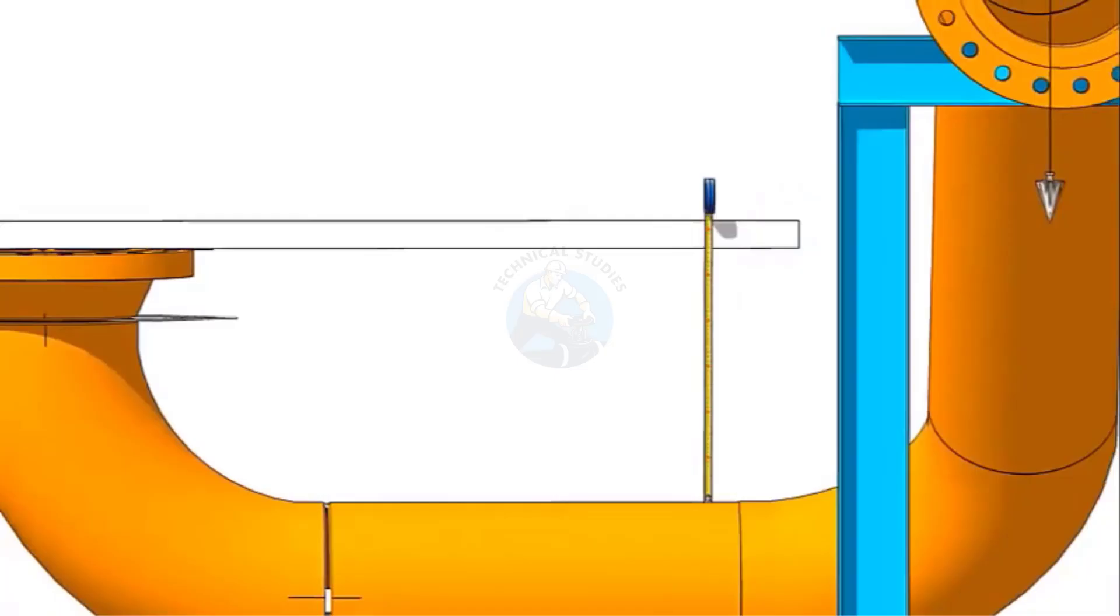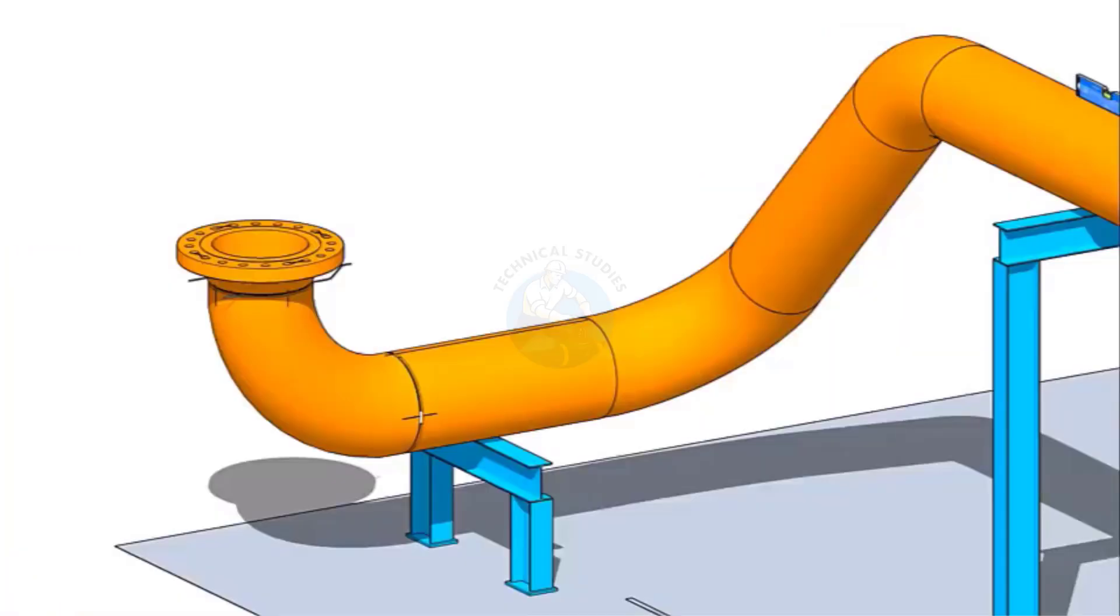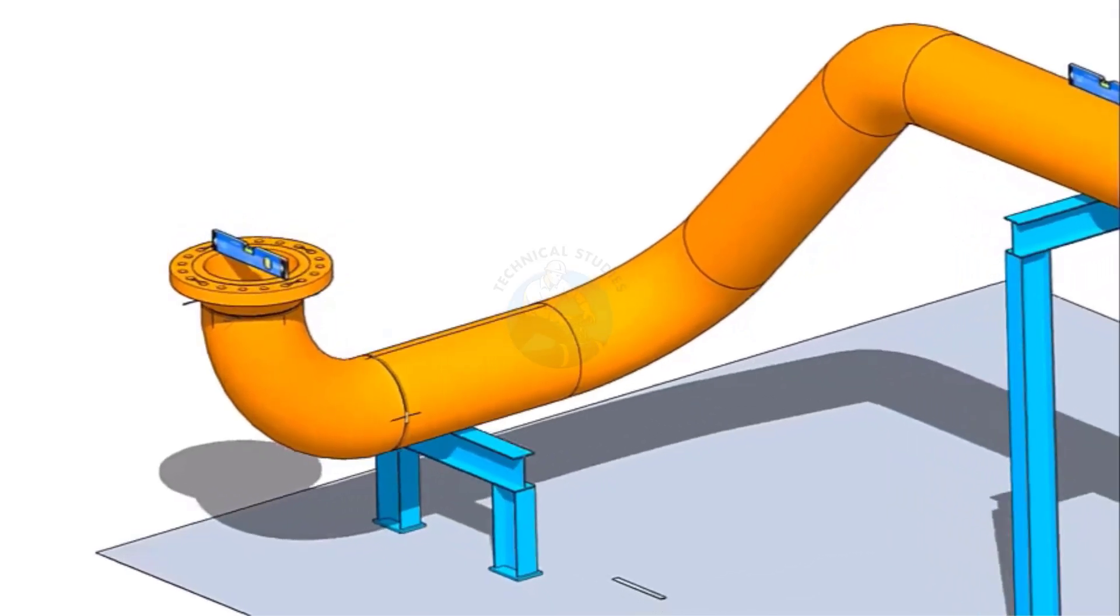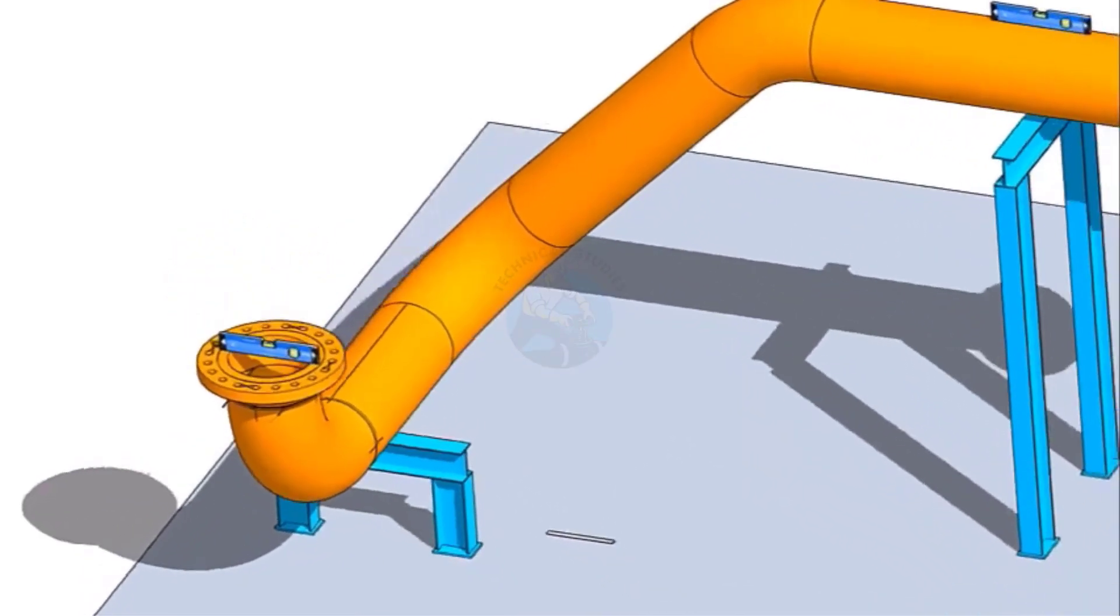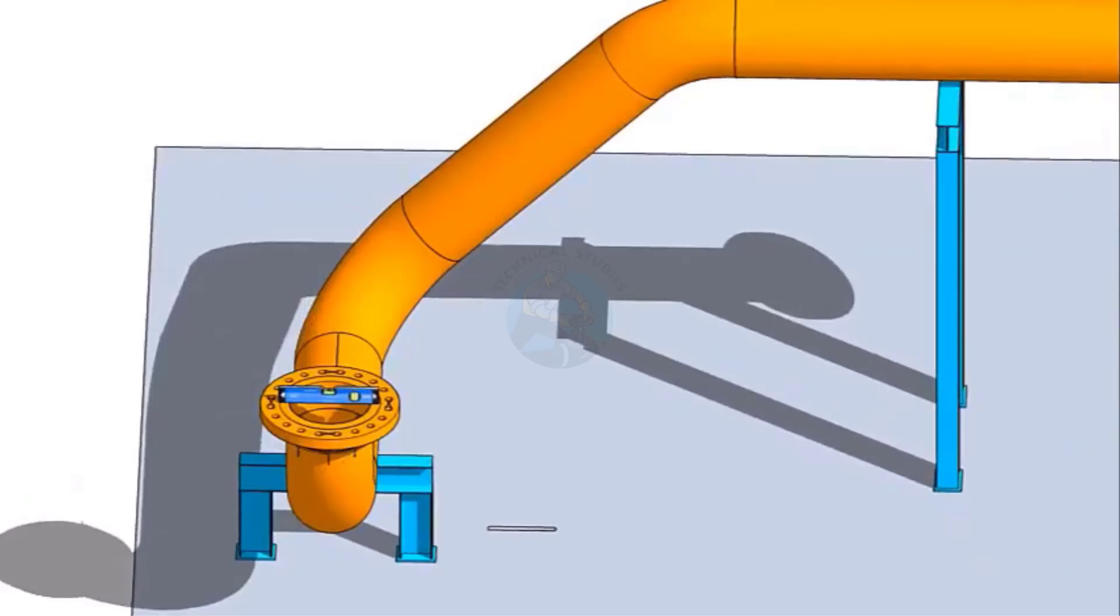If the measurements are equal, that means the face of the flange and the axis of the pipe are parallel. Tolerance may apply as per the procedure. Please watch my previous videos for piping fabrication tolerance.